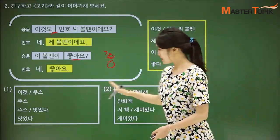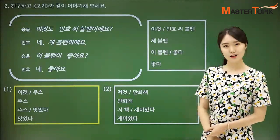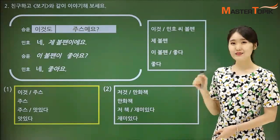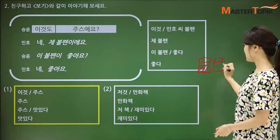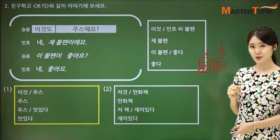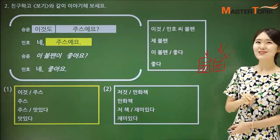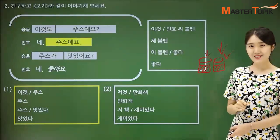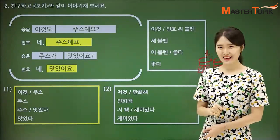Let's do it together: 이것 주스 — how can you make it? 이것도 주스예요? Is this also a juice? Maybe there would be two juices, and he asked: this one is juice, and is this one also a juice? 이것도 주스예요? 네, 주스예요. 주스가 맛있어요? Is this juice delicious? 네, 맛있어요. Yes, it's delicious.